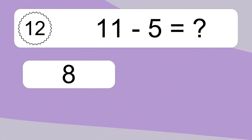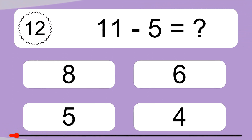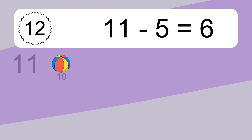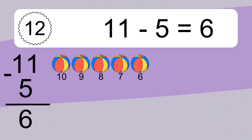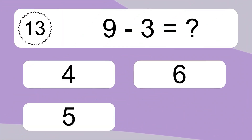11 minus 5 equals what? 11 minus 5 equals 6. Let's count it. 10, 9, 8, 7, 6.